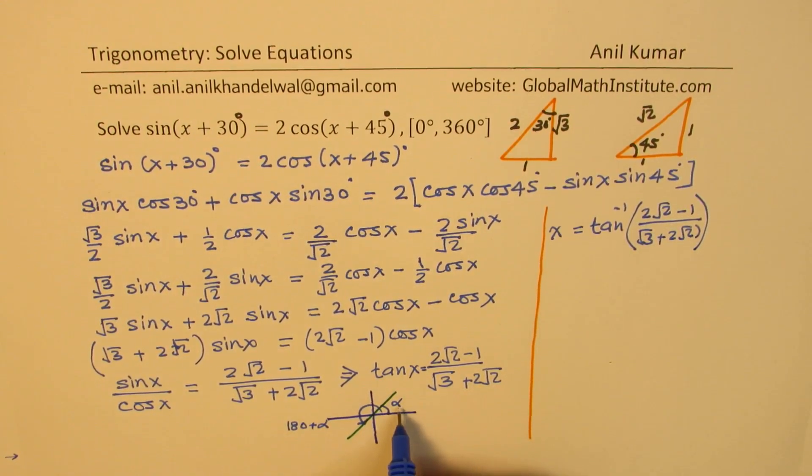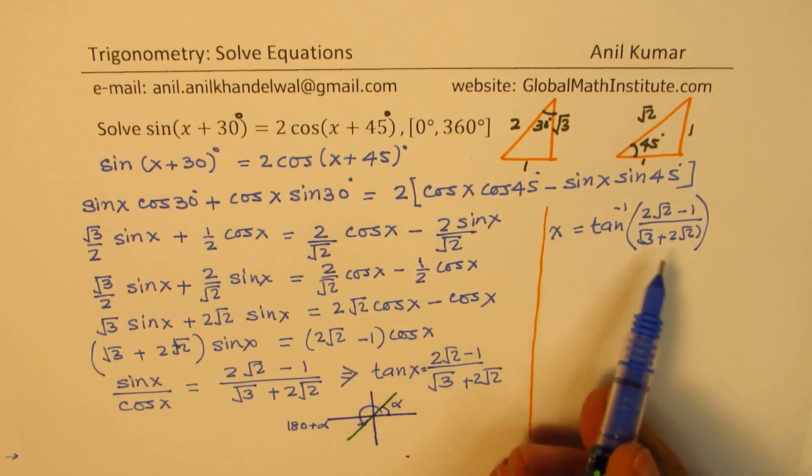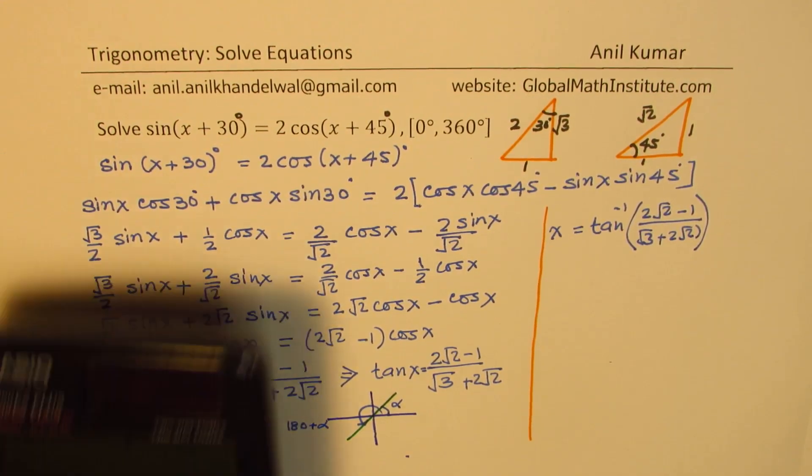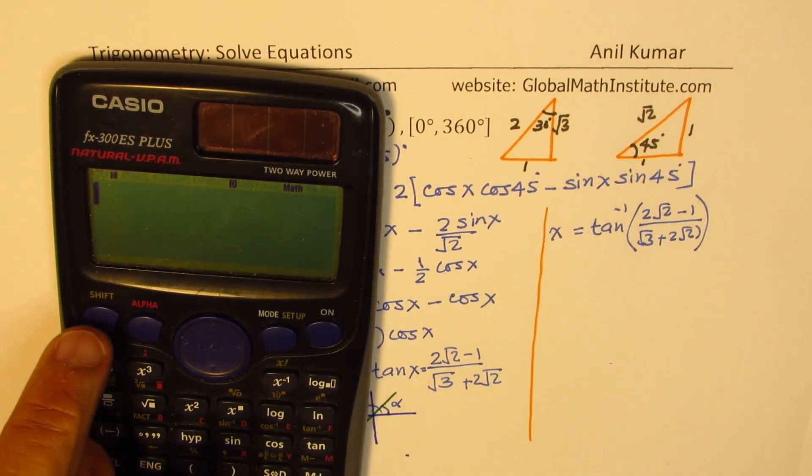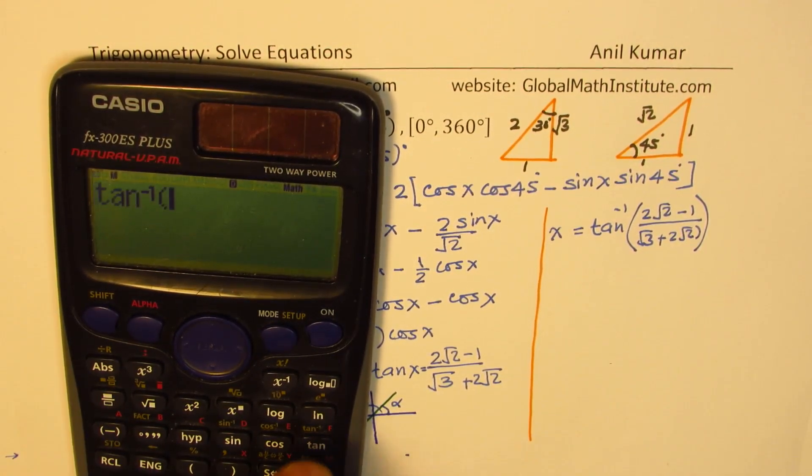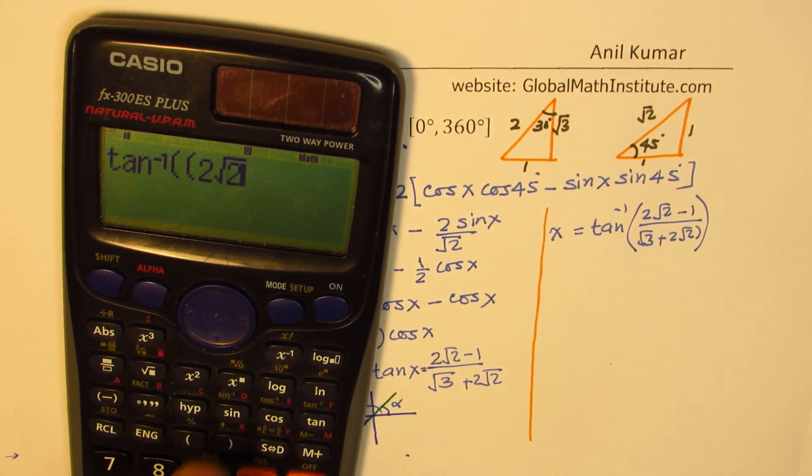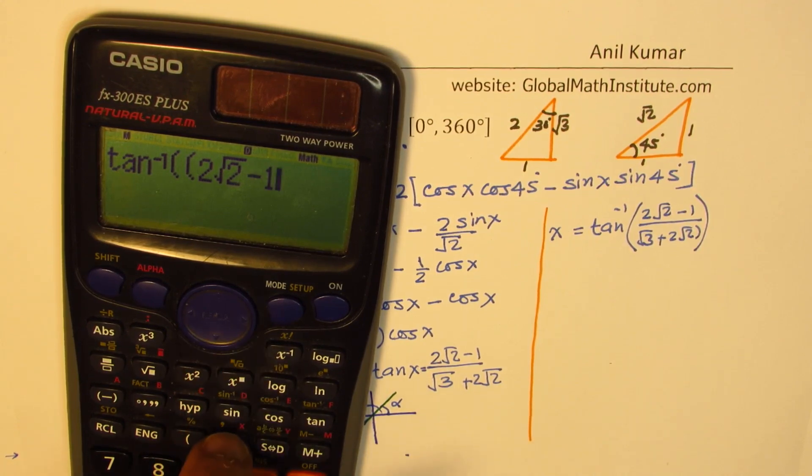Since alpha is also equal to x, we are in quadrant 1. We'll just calculate this out. So what we have here is, shift inverse to get the tan inverse, and numerator, let's put it in brackets, 2√2 - 1, bracket close.